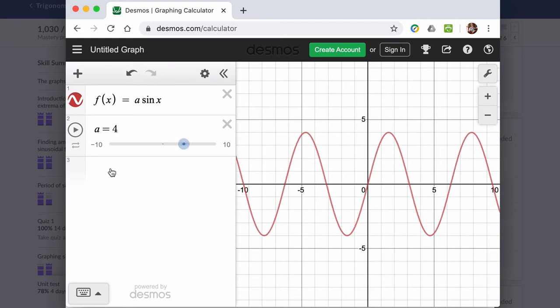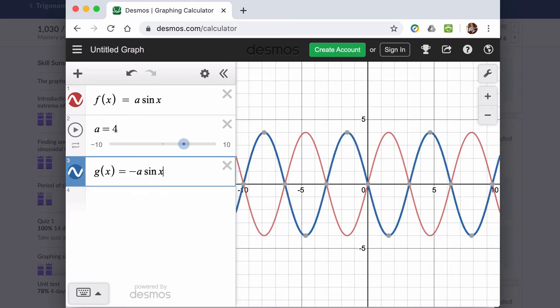Now let's make a second function. Let's call it g of x. It's also the sine of x, but it's going to be negative a sine of x.